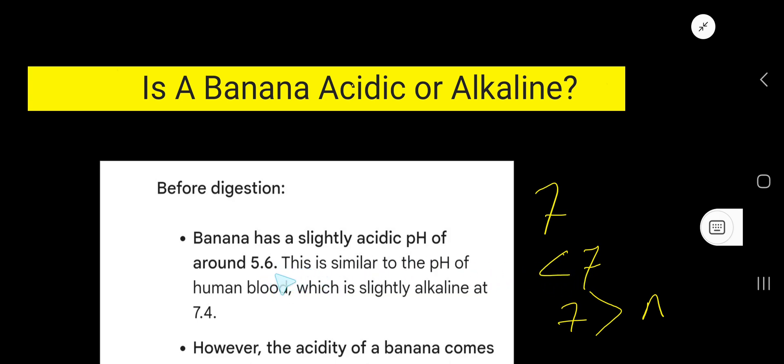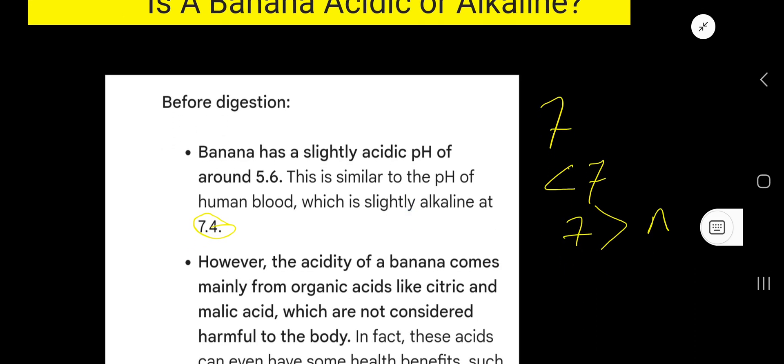So banana is acidic in its natural state. The blood pH of a human body is 7.4, which is alkaline. Right, our blood is alkaline. So banana is acidic, but this is before eating or digestion.